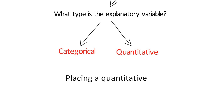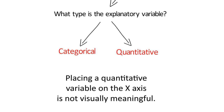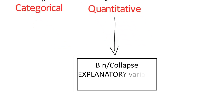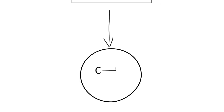Since it won't be visually meaningful to examine a bar chart with a quantitative explanatory variable on the x-axis when our response variable is categorical, before we start to graph, it's important to bin our explanatory variable into categories. That is, in order to visualize the relationship we're interested in, we need to add some data management that will allow us to construct a categorical-to-categorical, or C2C, bar chart.